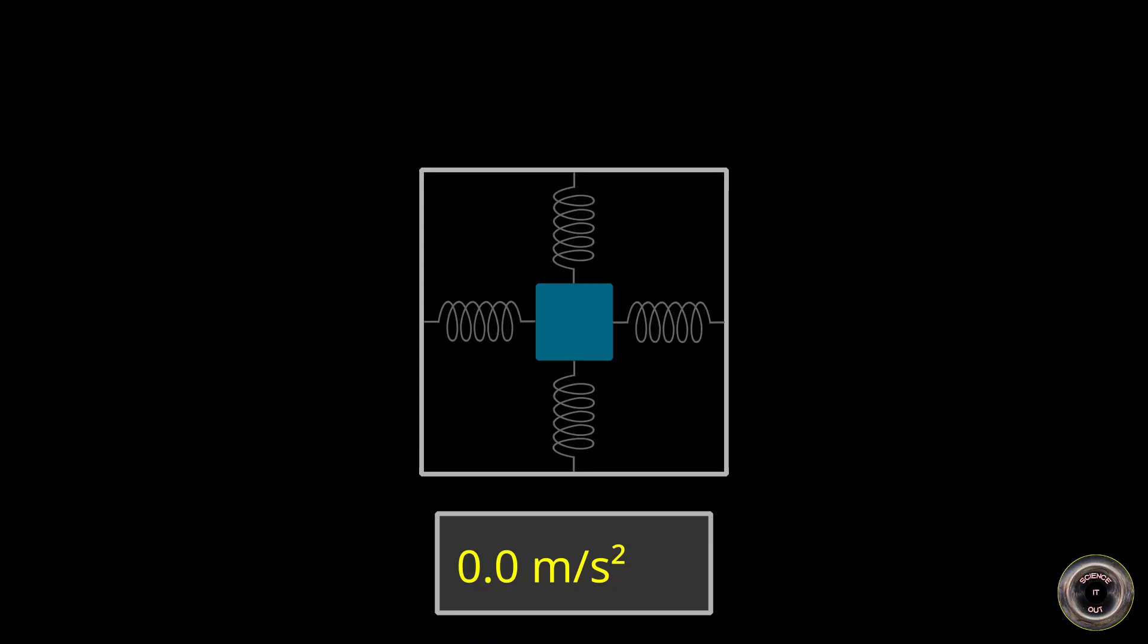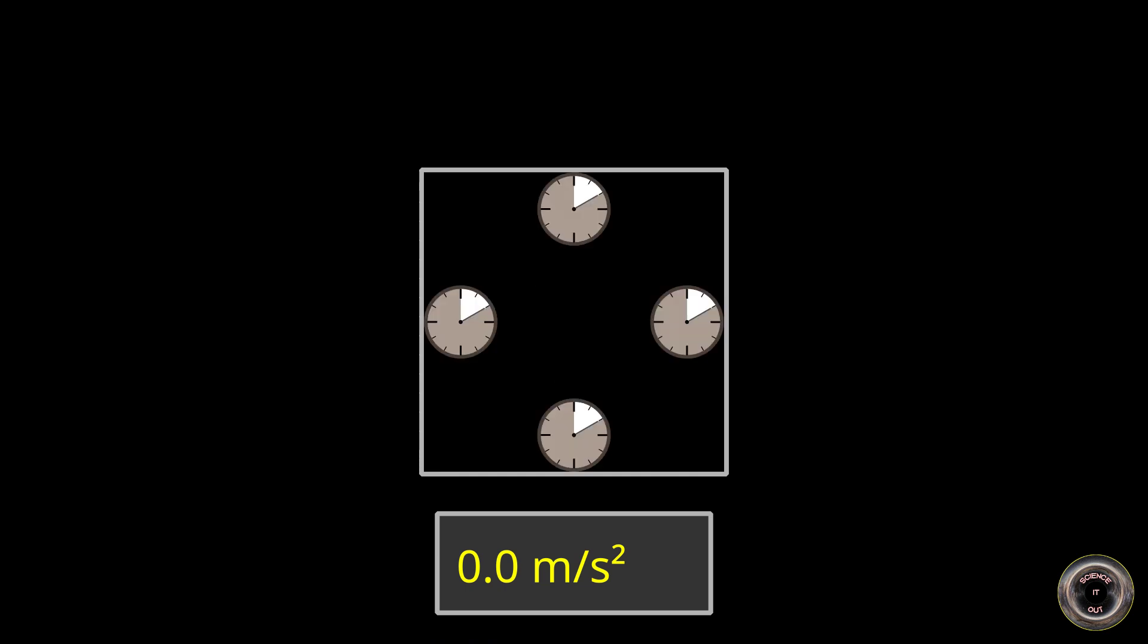Instead of a weight on identical springs, have identical synchronized clocks. If the accelerometer gets accelerated in some direction, it means its word line becomes curved. And if it becomes curved, the clock on one side of the curve would start measuring less time than the clock on the other side. The acceleration is then towards the clock that is ticking faster.